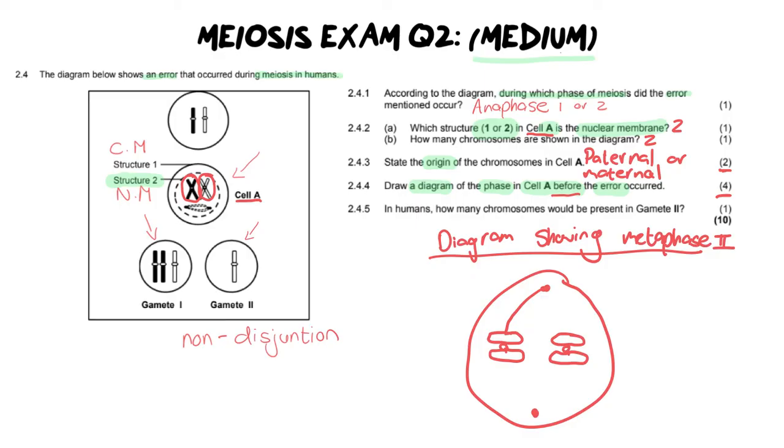Now it is for four marks, which means you need to give at least three labels. There's a lot that you can label here. You can do the cell membrane, you could do spindle fiber. What else could we do here? We could do the chromosome.